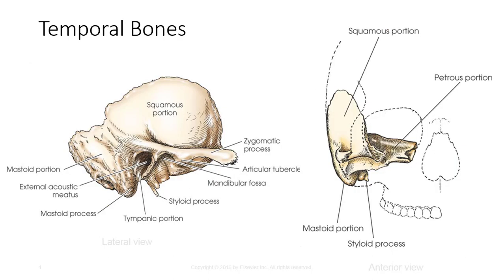The temporal bones are situated on each side of the cranial base between the greater wings of the sphenoid and the occipital bone, and form a small portion of the posterior cranial fossa. Temporal bones consist of the squamous portion, tympanic portion, styloid process, zygomatic process, and pteromastoid portion, which contains the organs for hearing and equilibrium. The squamous portion is the thin upper portion of the temporal bone that forms part of the side wall of the cranium. The zygomatic process is a prominent arched process that projects anteriorly to articulate with the zygoma to complete the zygomatic arch. The articular tubercle is located on the inferior border of the zygomatic process and forms the anterior boundary of the mandibular fossa, which receives the condyle of the mandible to form the temporomandibular joint.